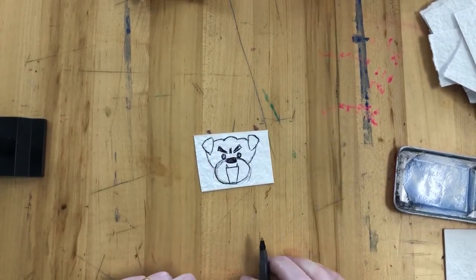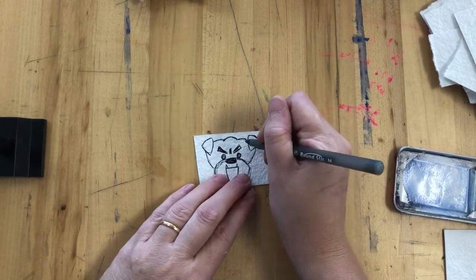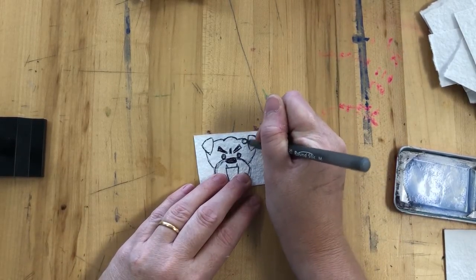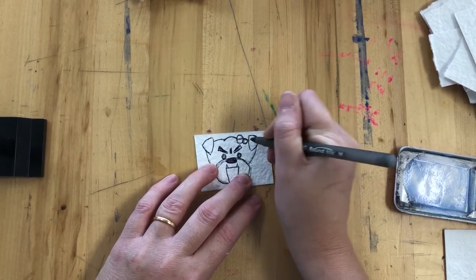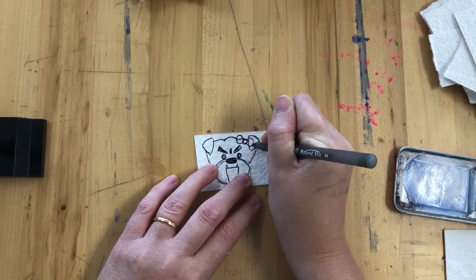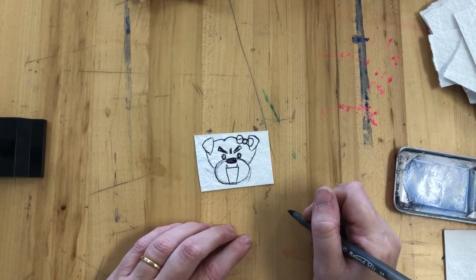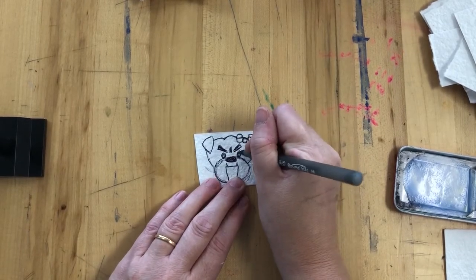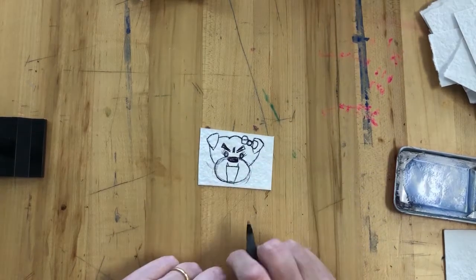So there you go. That's your Billy bulldog. If you want to make a Betsy bulldog, the best way to do it is to add a circle there and then just turn it into a bow. And then it becomes a Betsy bulldog. And if you want to make it even more like a girl, you can flick some eyelashes on the eyes.